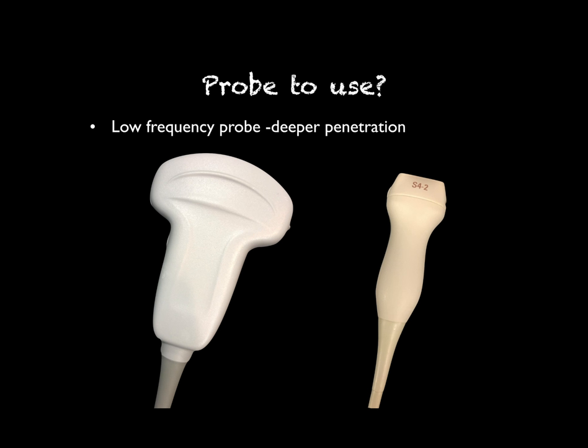When we go to do renal ultrasound, you need a low frequency probe so it can penetrate deeper into the body. You can use either a phased array or a curvilinear. My preference is a curvilinear — that does make it more difficult to look between the ribs, however I think you have a little bit better lateral resolution. Some people really like the phased array because they can shoot through those ribs better, but I feel like the resolution isn't quite as good. That's really a personal preference or depends on what you have available; either one would be fine.